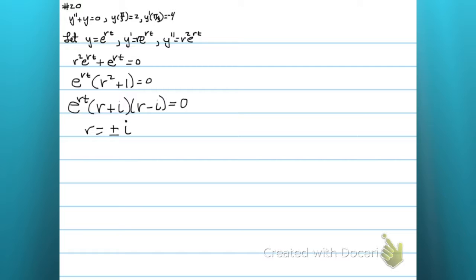And you'll find that r is going to be zero plus or minus i. So my real part is zero and my imaginary part is 1.